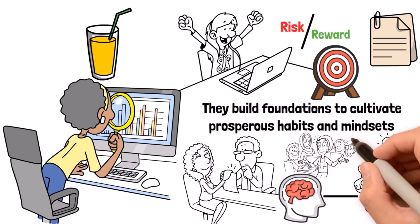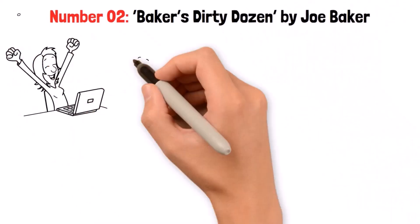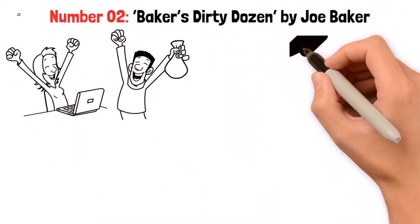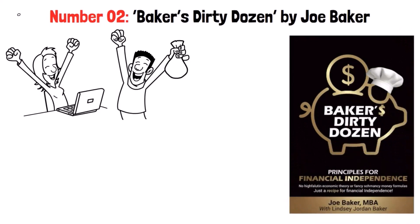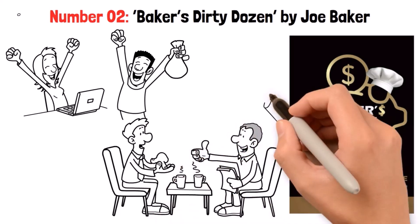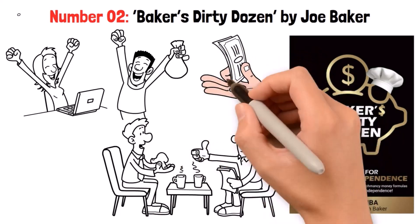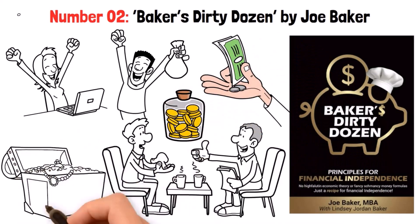Number 2: Baker's Dirty Dozen by Joe Baker. For all individuals seeking financial savvy sans stuffiness, Baker's Dirty Dozen is a must-read. In this book, Mr. Baker pays great attention to things like paying yourself first, keeping expenses low, and investing regularly.